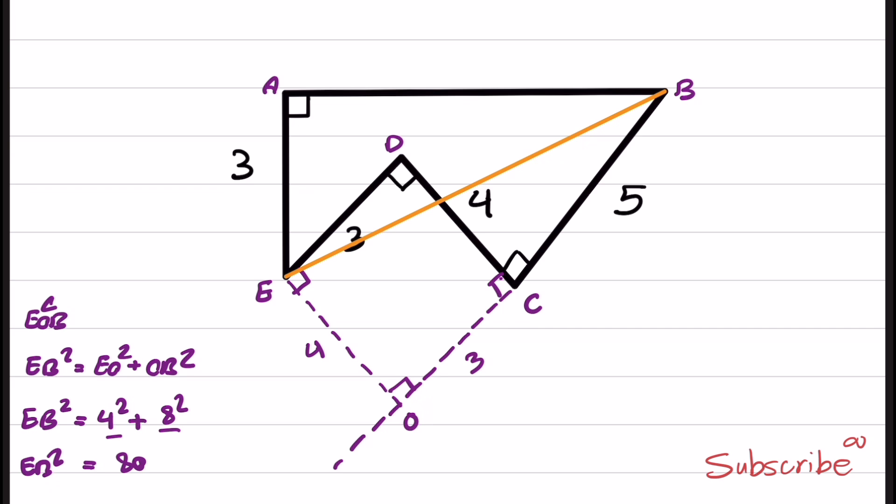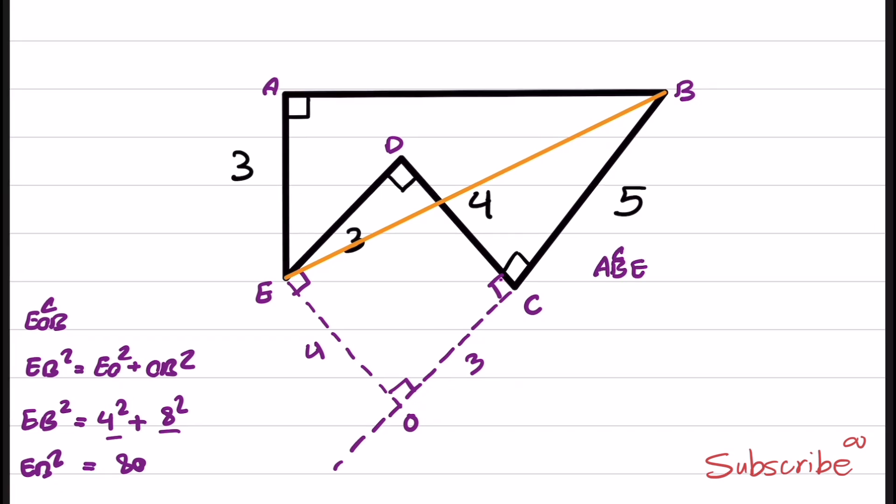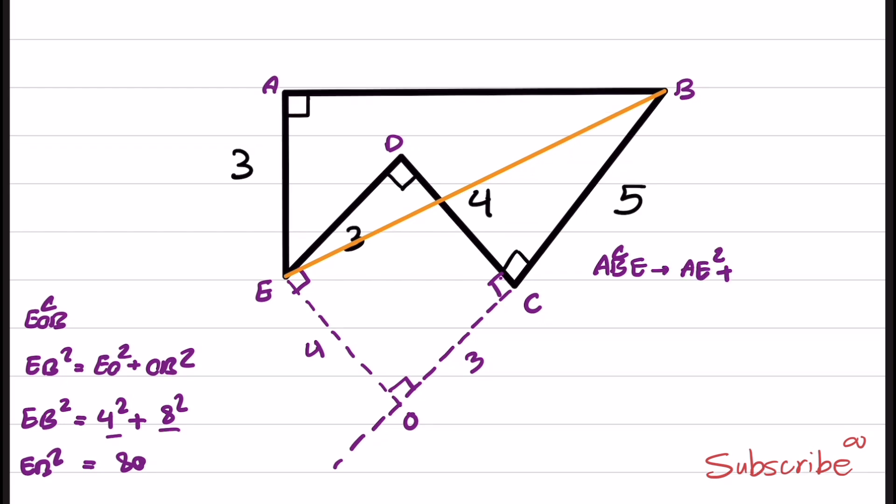Now we know EB², and we can apply the same theorem to this triangle. In triangle ABE, we have AE² + AB² = EB². Let's replace the terms. AE is 3, so it is 3² + AB² = EB². And we know that EB² = 80. And this will give us AB² = 71, and AB = √71.